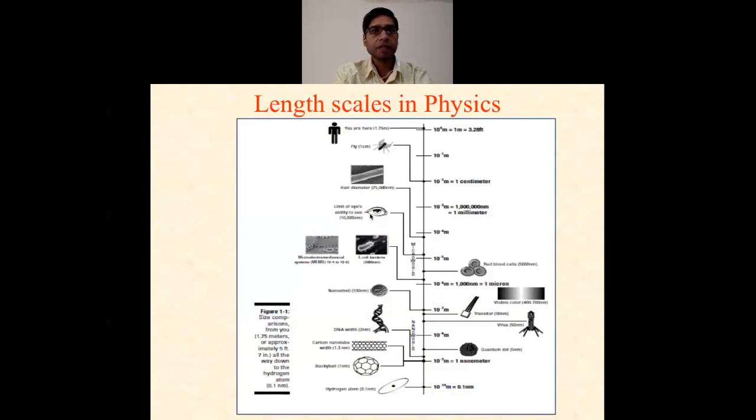Now, this is the length scale in physics. You can see in this slide how the different length scales are found in nature. For example, you are at the top, that is 1.75 meters or almost one meter, and at the bottom scale is the hydrogen atom, that is of the order of 0.1 nanometer. Different scales are there, for example a fly at the centimeter or millimeter range, and hair diameter that I told earlier, 75,000 nanometers. You can see RBCs and different scales, how they go from nano to bulk.